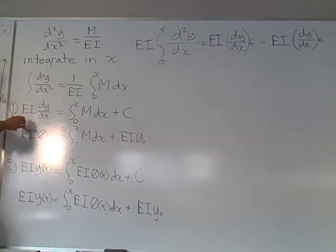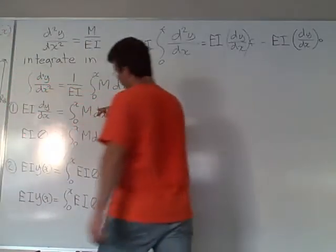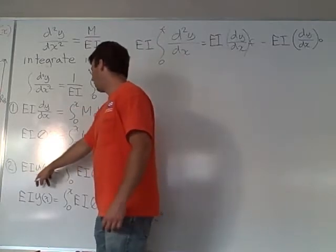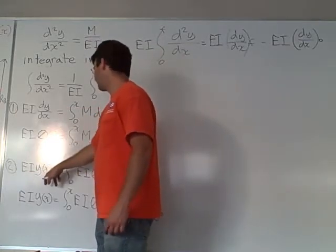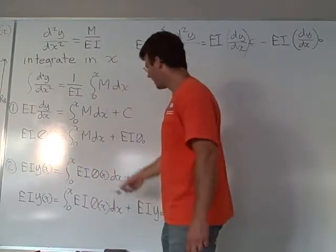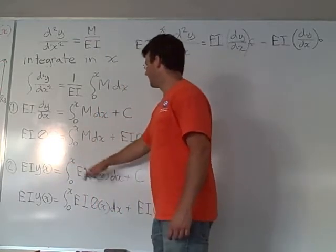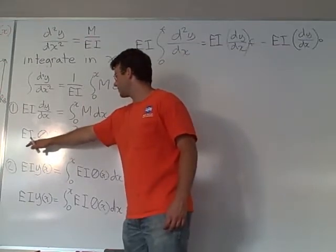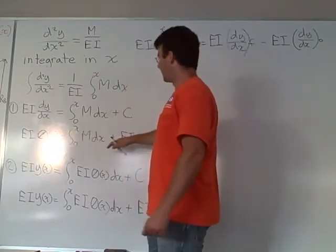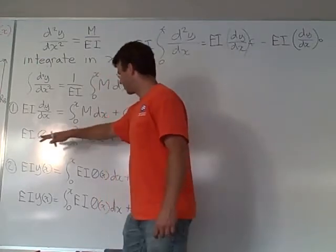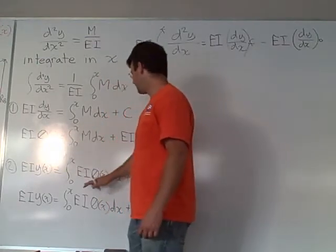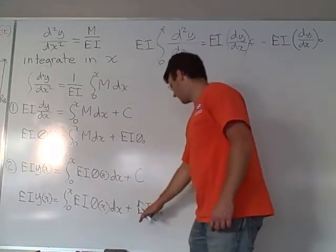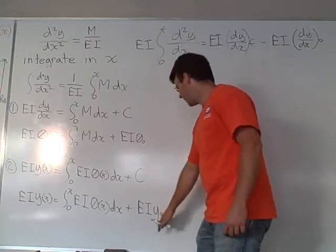If we go ahead and integrate our first derivative, we come up with a y of x, an equation in terms of y of x. That's going to equal the integration of this right here, the term that we had to find first. So we find this first, then we integrate that in x, and we get another integration constant.